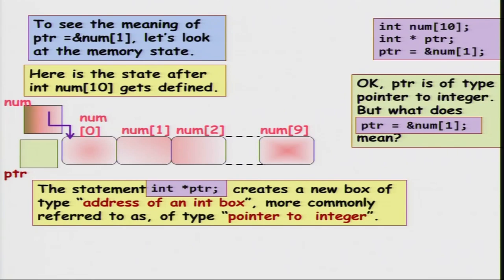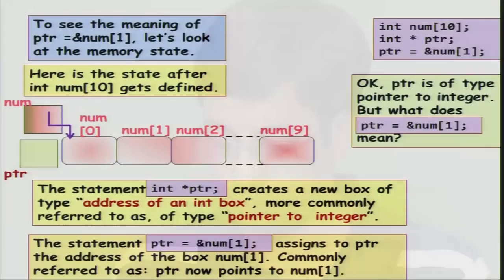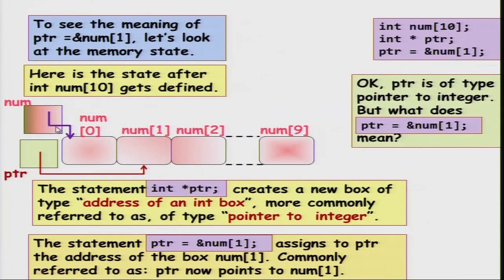Now I declare int* ptr, so I create a box. This box is supposed to hold the address of some integer variable — ptr is of type pointer to integer. The statement ptr = &num[1] says that ptr now points to num[1], or ptr contains the address of num[1]. Pictorially we denote an arrow from ptr to num[1], just like there is an arrow from num to num[0], because the name of the array holds the address of the first location.